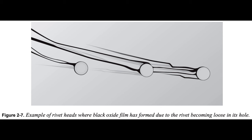Spar lines are lateral rivet lines that extend across the wing, horizontal stabilizer, or vertical stabilizer. Pilots should pay close attention to spar lines looking for distortion, ripples, bubbles, dents, creases, or waves, as any structural deformity may be an indication of internal damage or failure. Inspect around rivet heads looking for cracked paint or a black oxide film that forms when a rivet works free in its hole.